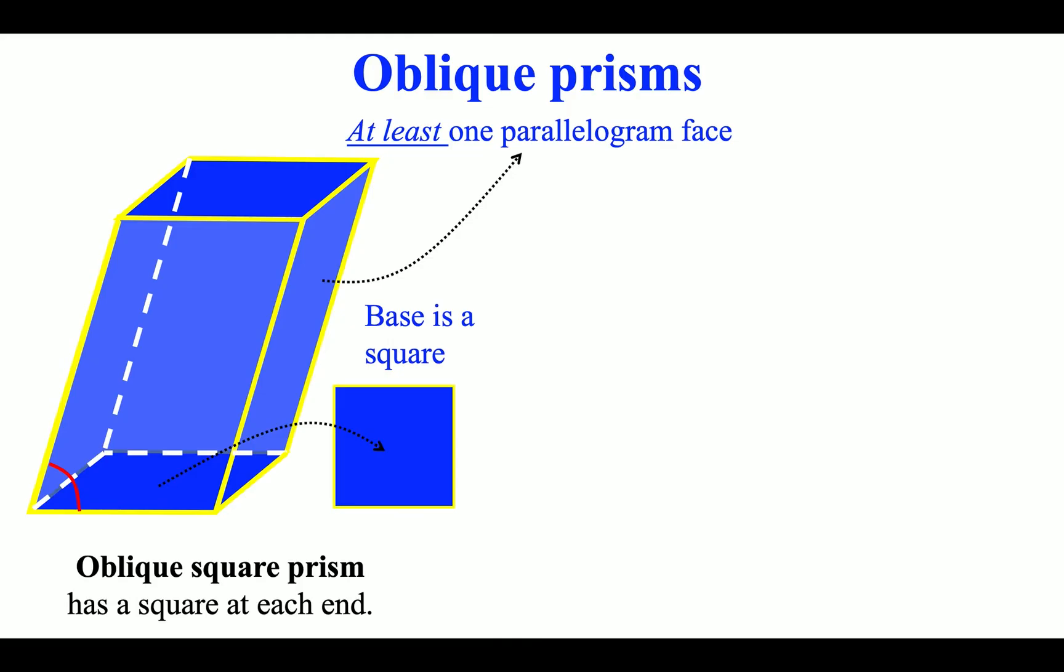Oblique square prism has a square at each end. It has at least one parallelogram face.